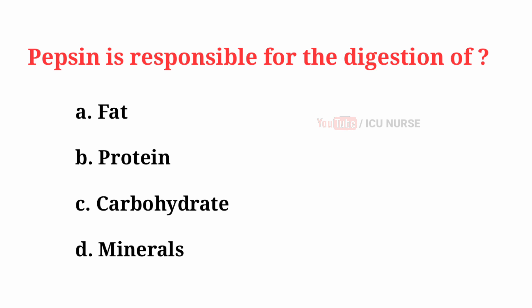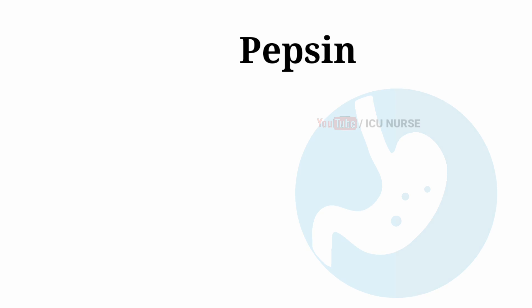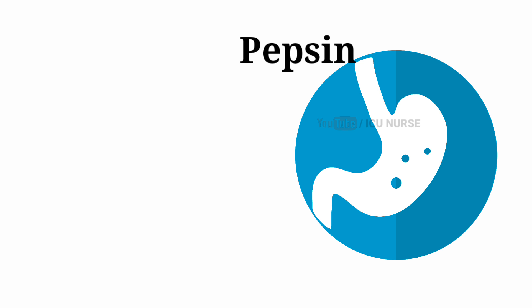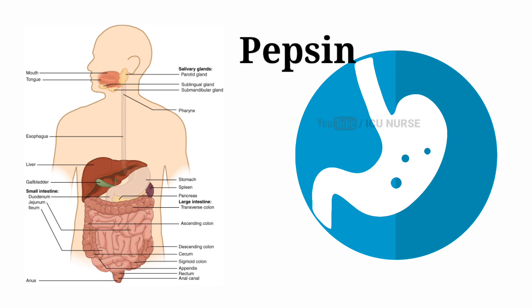Pepsin is responsible for the digestion of? The correct answer is B: Protein. Pepsin is produced in the stomach and is the main digestive enzyme in the digestive systems of humans, where it helps digest the proteins in food.